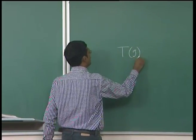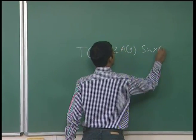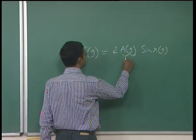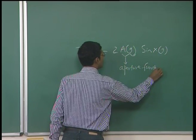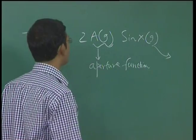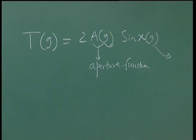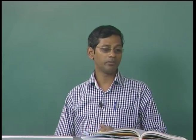The transfer function can be written as shown, where the first factor as a function of G is basically the aperture function. This is a strong function of G and psi, where psi is basically the angular factor which comes into play. From this function we have seen how psi plays a very important role, and finally we derive the optimum values of psi.